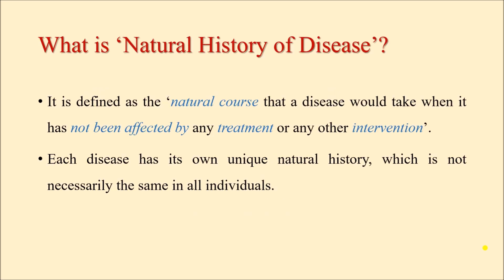So what is natural history of disease? It is often defined as the natural course that a disease would take when it has not been affected by any treatment or any other intervention. That means if a person is infected and develops a disease, or is exposed to a risk factor and develops a non-communicable disease, how the disease is going to progress naturally in that human being — provided we have not given any treatment or taken any intervention to treat that disease or minimize suffering.